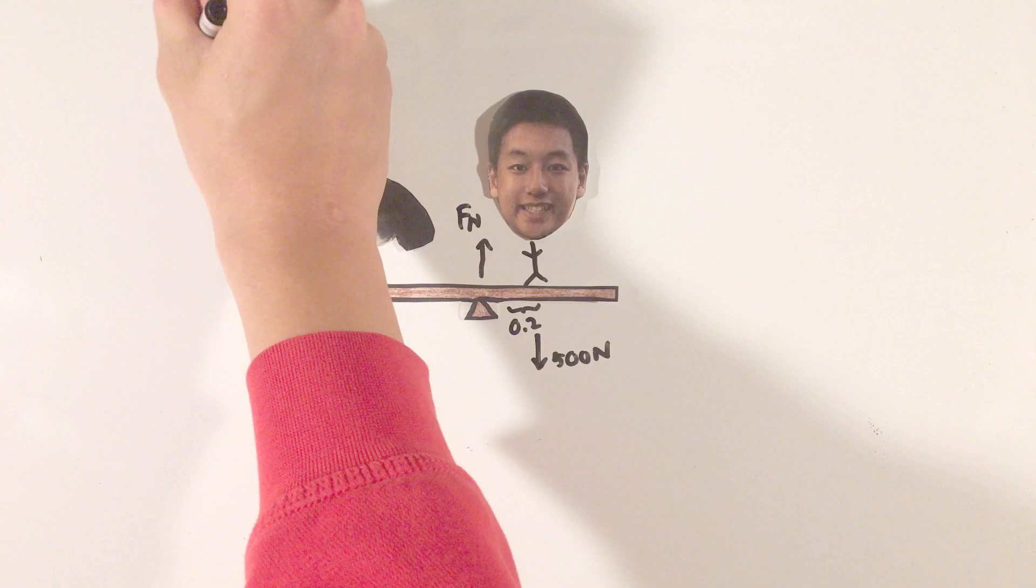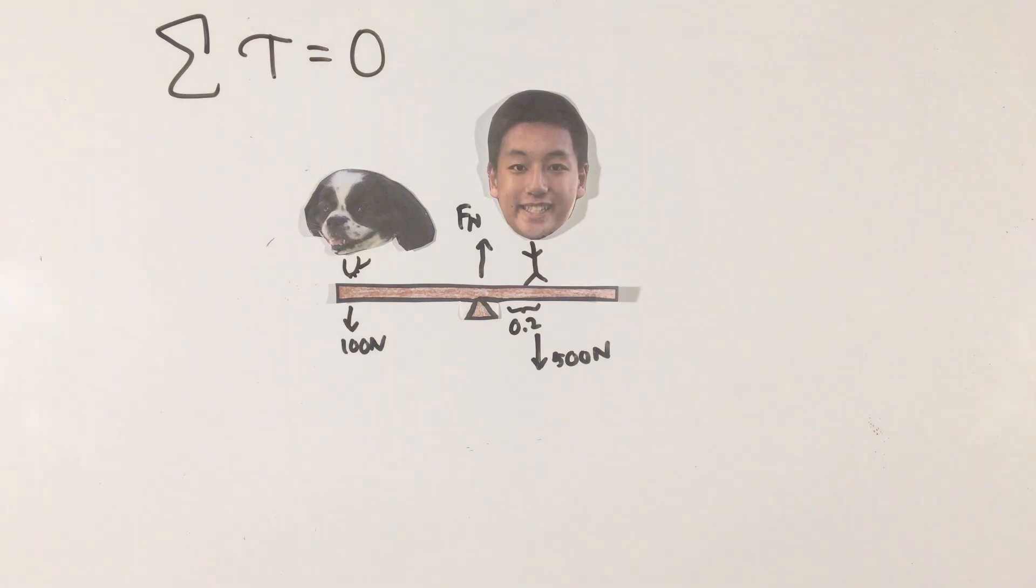With that, we can look at the first and arguably most important step to solving torque questions: choosing a pivot point. Because torques involve a lever arm, we can technically analyze the torques on this seesaw from any point in the world. However, because the normal force is variable and changes based on the mass we place on the seesaw, let's select our pivot point to be the fulcrum, making the lever arm and thus the torque due to this variable and complicated force equal to zero.